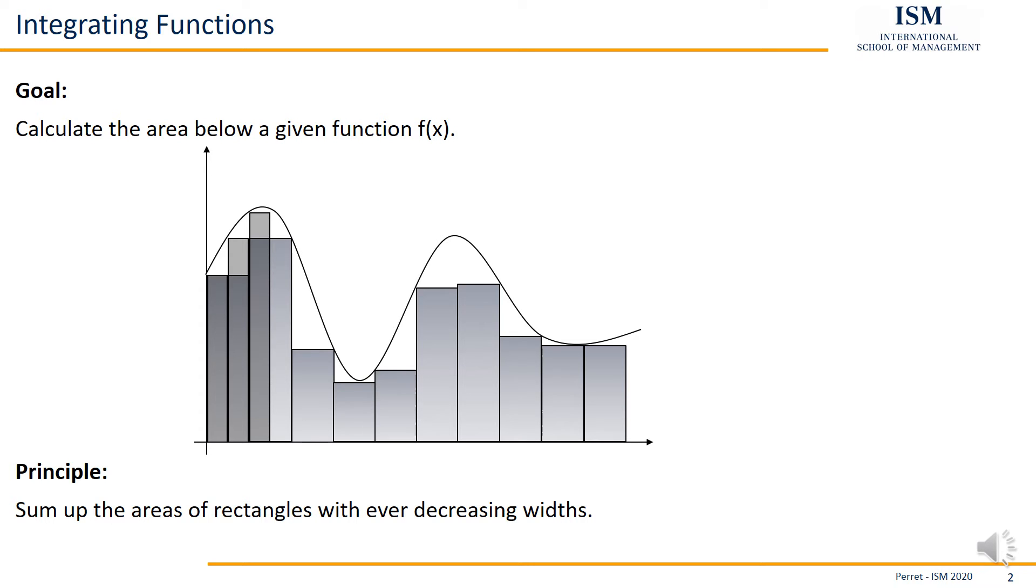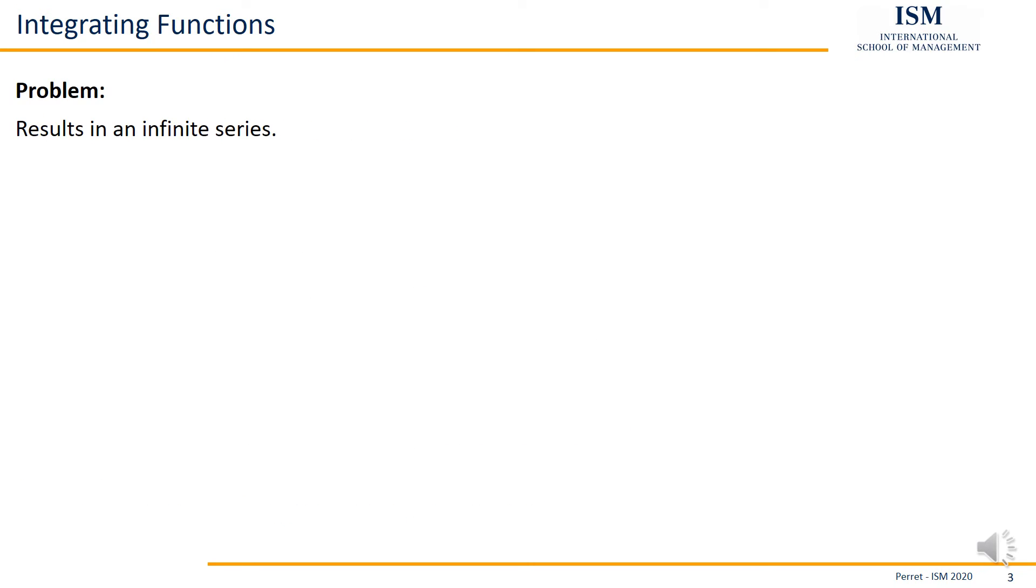So that's basically what I said before. Problem? Well, as I stated, we have an infinite series of rectangles. So we try to make it a bit easier by using the so-called primitive, which is just large F(x) of a specific function.